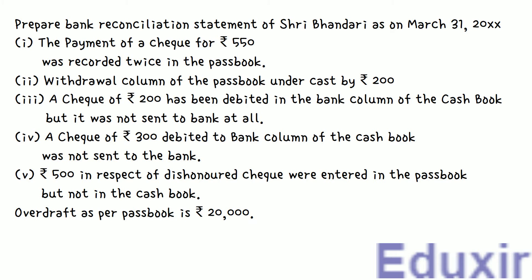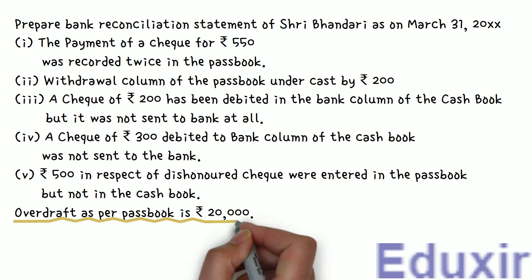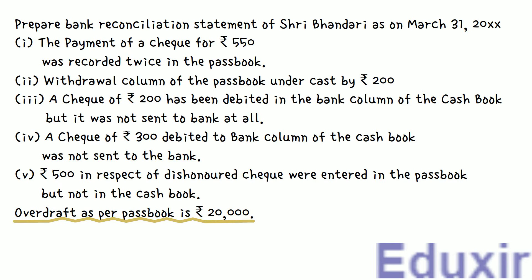I want to reiterate that when there is any debit entry in the business cashbook, the corresponding entry in the bank passbook would be on the credit side. Similarly, if there is any credit entry in the business cashbook, the corresponding entry in the bank passbook would be on the debit side. We have to keep this in mind while analyzing these particulars. Here, it is given that the overdraft balance as per the passbook is 20,000 rupees. The overdraft balance in the passbook means there is a debit balance in the passbook, which we call the unfavorable balance of passbook. In this problem, the debit or overdraft balance as per the passbook is given, and we need to find the balance in the business cashbook.